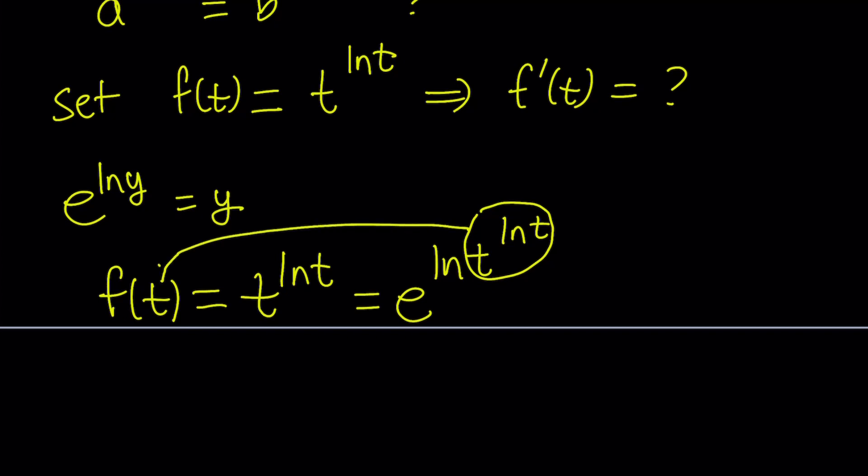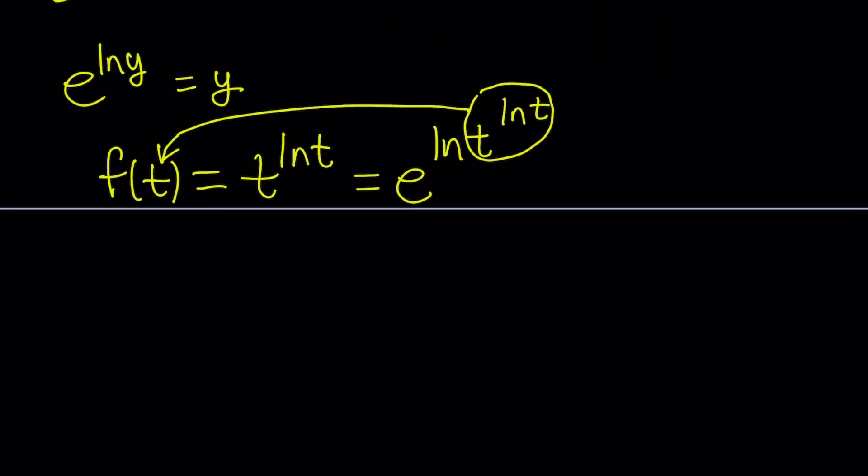So by doing this, we're simplifying our function a little bit, or making it easier to differentiate. Because when you have a function to the power another function, it's hard to differentiate because you don't really have rules for it. So let's go ahead and bring this down by using properties of logs. That's going to give us e^(ln t · ln t), which is e^((ln t)^2). That's our function f(t) written in an exponential form.